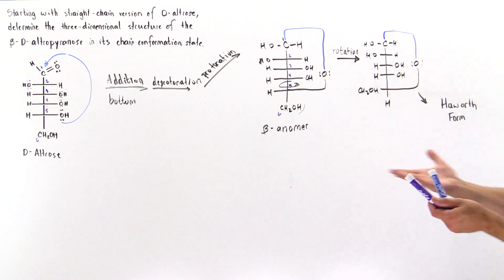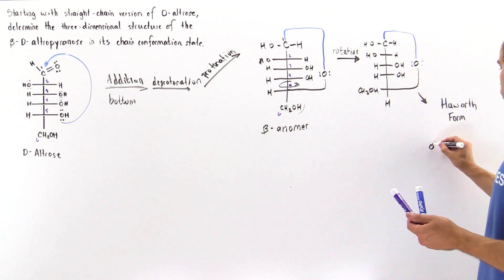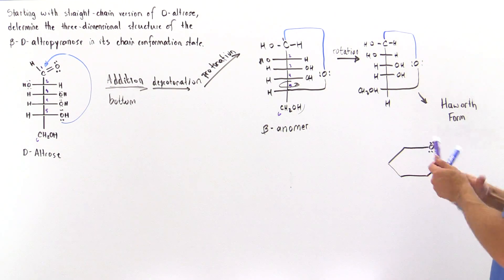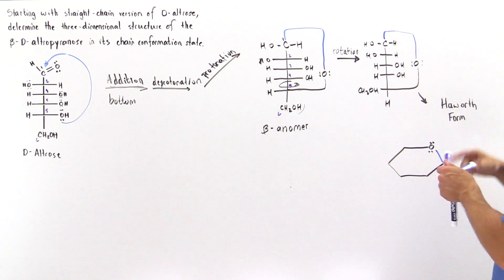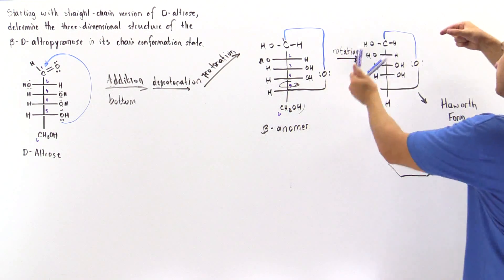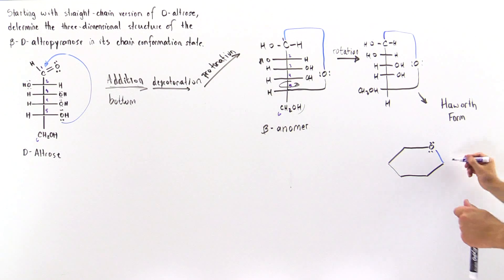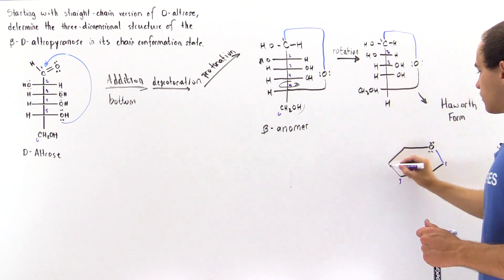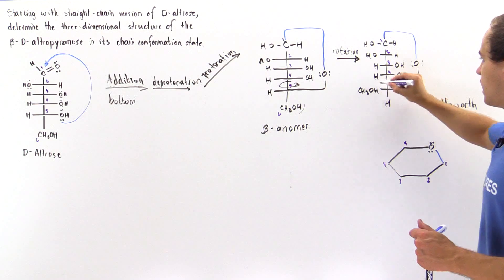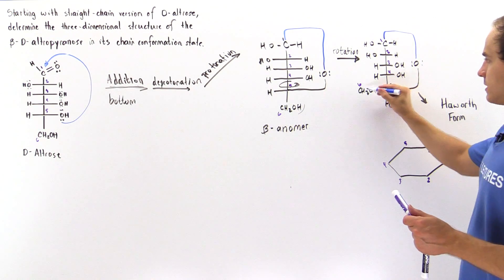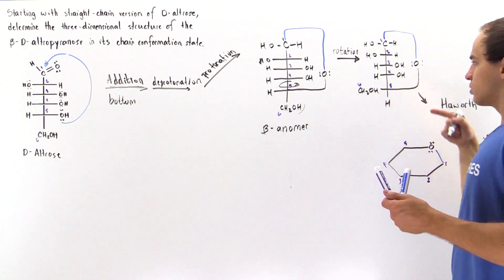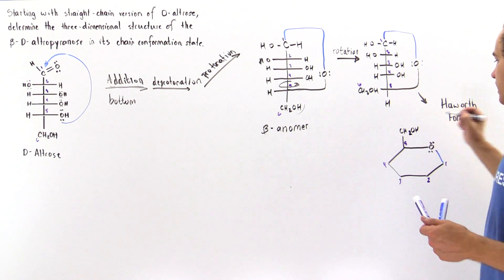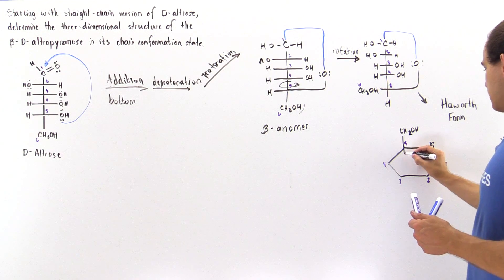The Haworth form is a cyclic three-dimensional form with a planar structure, though that is not exactly right — which is why we need to transform it into the more stable chair conformation in a moment. We flip it so that our oxygen is here, and carbon one is here. Carbon two, three, four, five — and since five is connected to six, we have a bond going out on top, so our alcohol also goes on top and the H goes on the bottom.